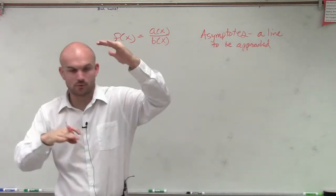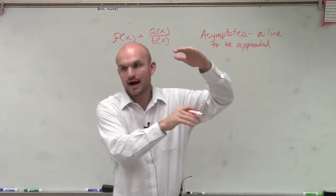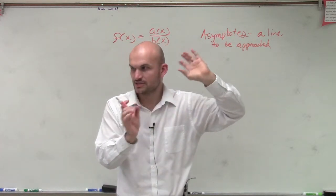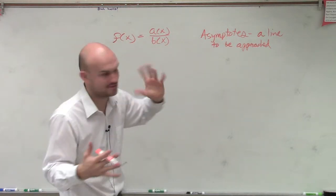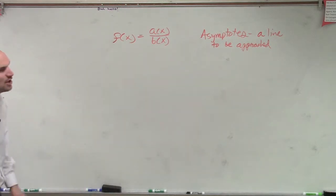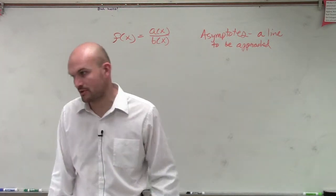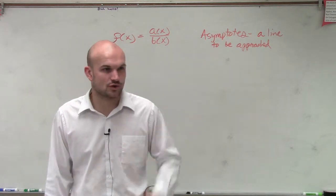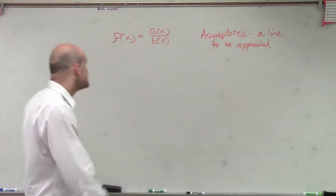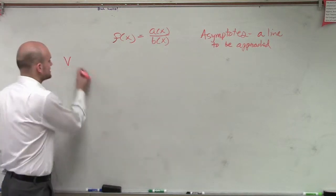We talked about how 1 over x approaches zero and approaches undefined. So there are three different types of asymptotes I want to give you guys, and I'm going to give you a short little rule to follow. The first one is what we call the vertical asymptote.